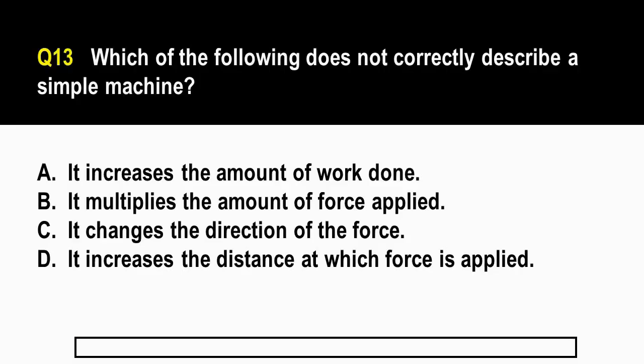Let's go to question number 13. Which of the following does not correctly describe a simple machine? Again, we're looking for a statement which does not describe a simple machine. A. It increases the amount of work done. B. It multiplies the amount of force applied. C. It changes the direction of the force. And D. It increases the distance at which force is applied.